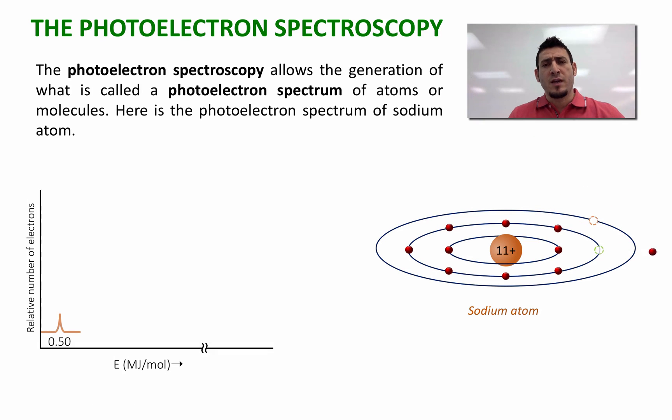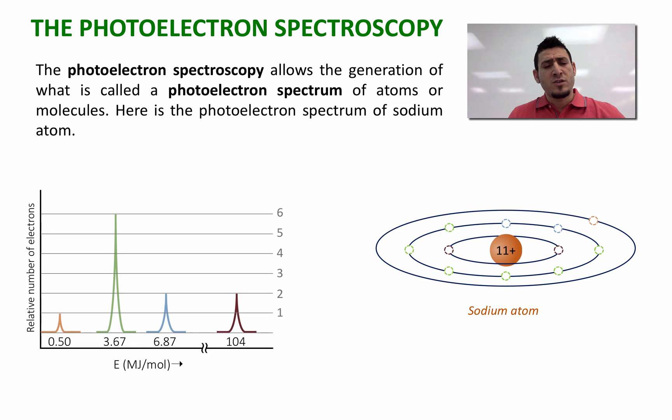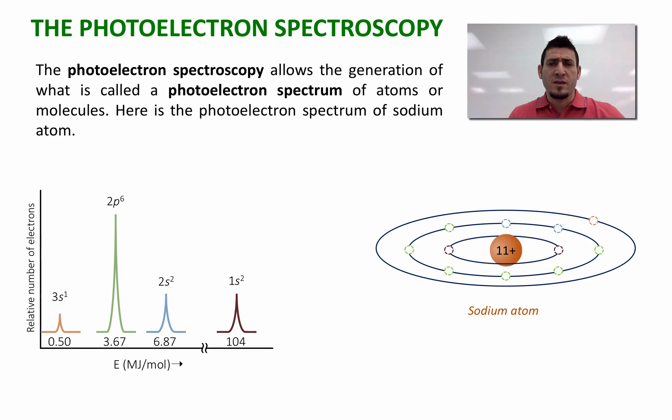Now sodium has 11 electrons. If we use a light with enough energy to remove all the electrons, we will be generating the photoelectron spectrum. According to the color code I'm using here, every time we remove an electron from a different energy level, we have a different peak. If we look at the intensities of these peaks, we can see that the peak at 0.50 corresponds to one electron and the peak at 3.67 corresponds to 6. The two peaks at 6.87 and 104 correspond to two electrons. So now we can associate this with the electron configuration of sodium, which is 1s², 2s², 2p⁶ and 3s¹.